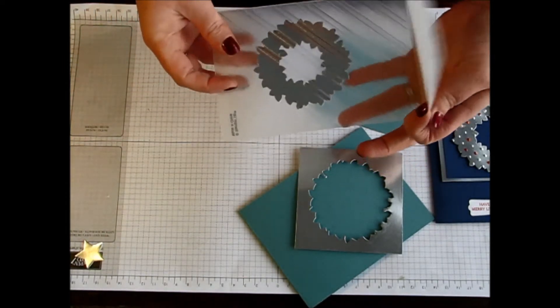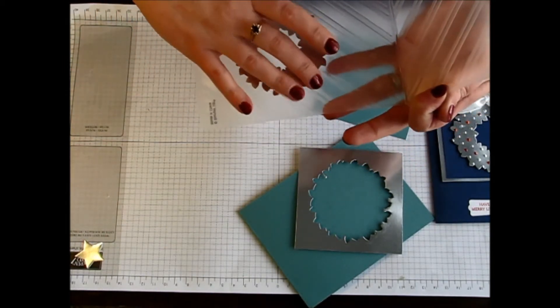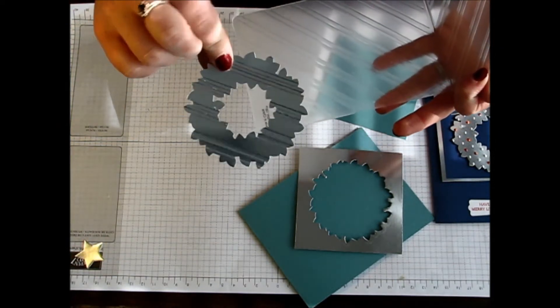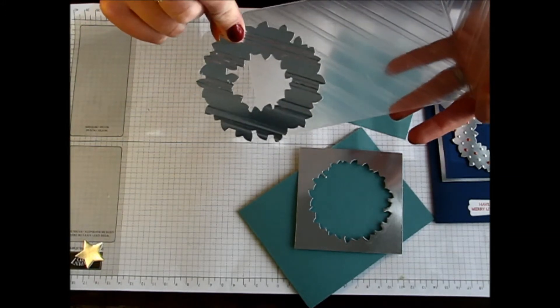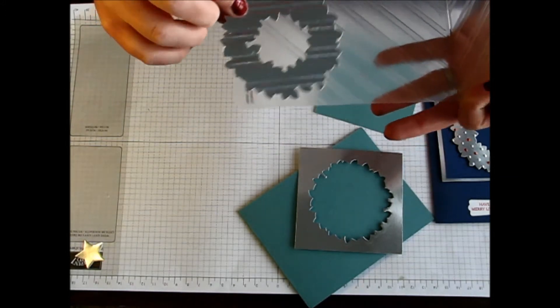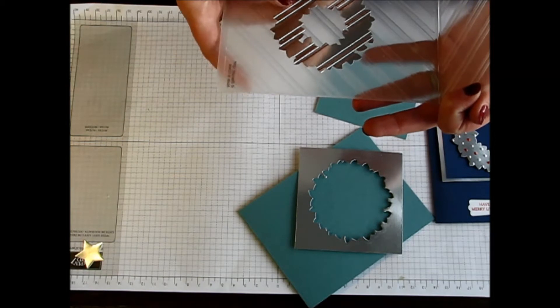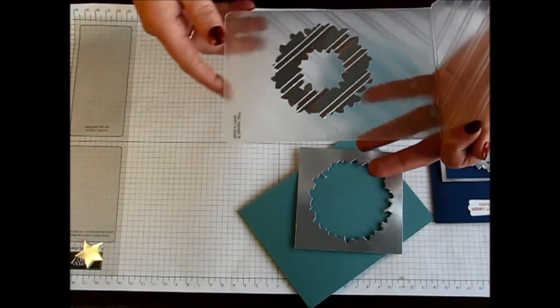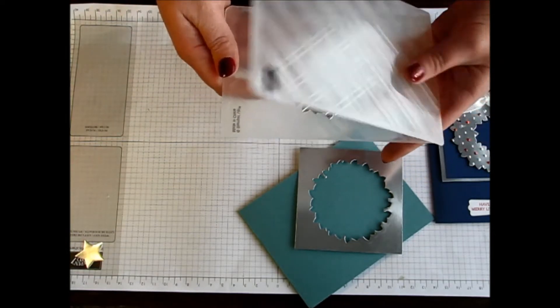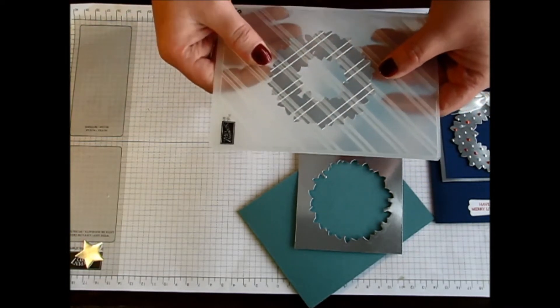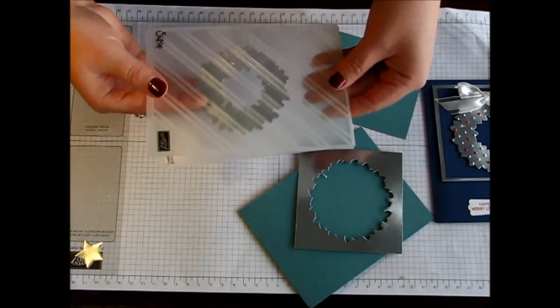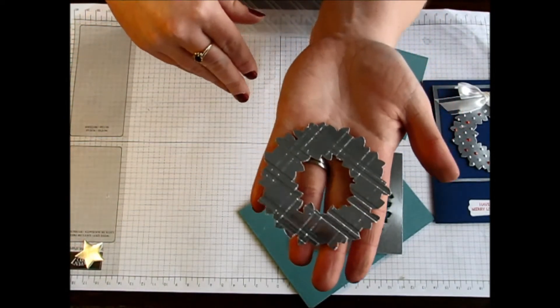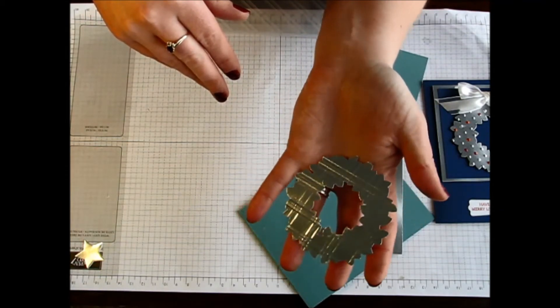So now you can see that I have these beautiful stripes on my wreath. You can kind of see them based on the reflection. But I don't want my stripes to just go one way, so I am actually going to then lay it back in there and run it through my embossing folder one more time.